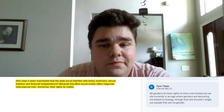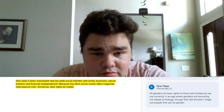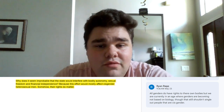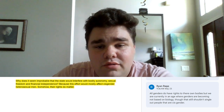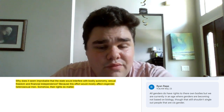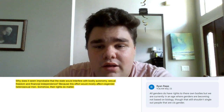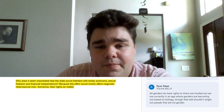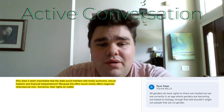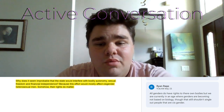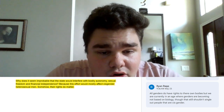Let's look at one more example. In this paragraph it states: 'Why does it seem improbable that the state would interfere with bodily anatomy, sexual freedom, and financial independence? Because this effort would most likely affect cisgender heterosexual men — somehow their rights do matter.' I annotated that paragraph with the comment: 'All genders do have rights to their own bodies, but we are currently in an age where genders are becoming not based on biology, though that still shouldn't single out people that are cisgender.' I started off this comment by having a conversation with the writer while also giving my opinion, showing an active conversation with the writer while still understanding the main idea of the paragraph.